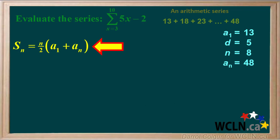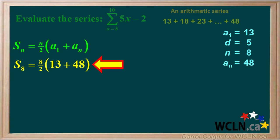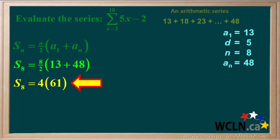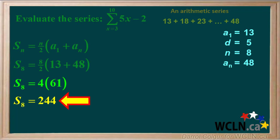We'll start with one of the equations for finding the sum of an arithmetic series. We put in 8 for n, 13 for a1, and 48 for an. 8 over 2 is 4, and 13 plus 48 equals 61. 4 times 61 is 244, so using this equation, we get 244 as the sum of this series.